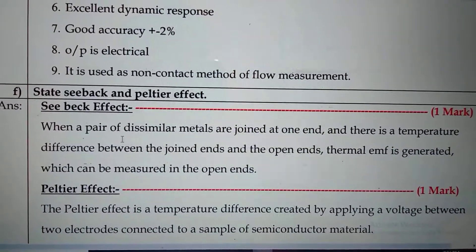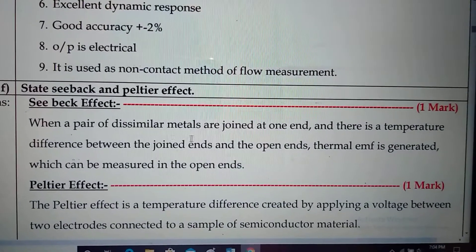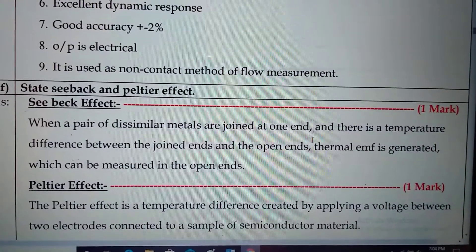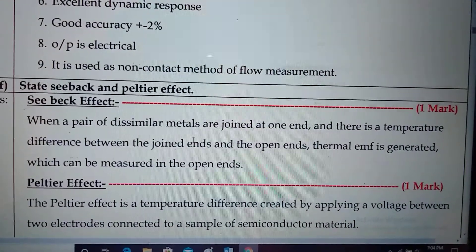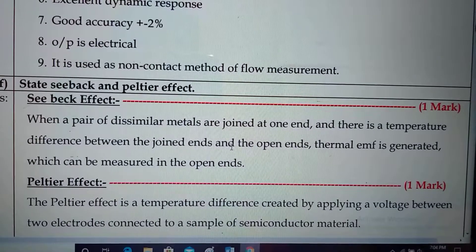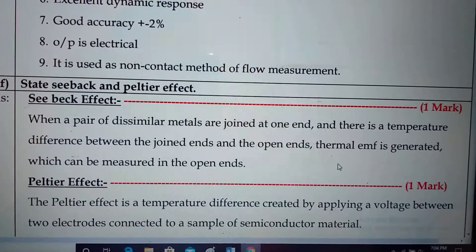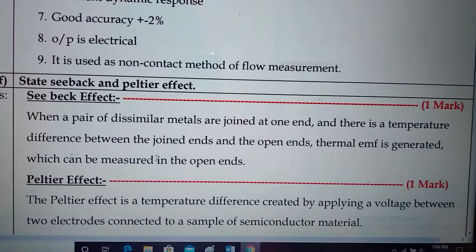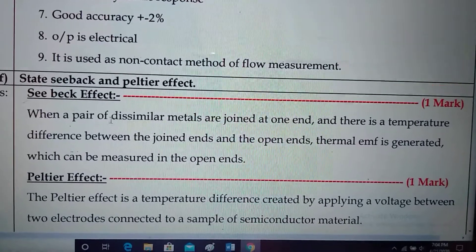Seebeck effect: When a pair of dissimilar metals are joined at the ends and there is a temperature difference between the junction ends and the open ends, a thermal EMF is generated which can be measured at the open ends. This effect is known as the Seebeck effect.